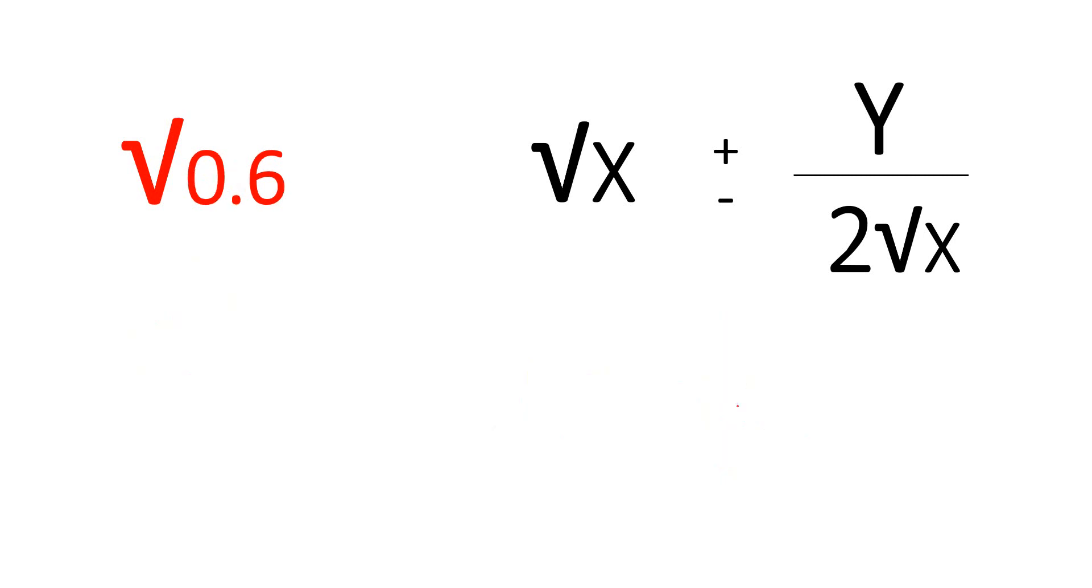For example, decimal points. Decimal points, how to find. Square root of 0.6. We can write 1 minus 0.4. Near to that is 1. So 1 minus 0.4. This is x, this is y. Careful. Square root of x is square root of 1. 1, minus is there. Minus y place is 0.4 by 2 into 1. 2, 2 is 0.2. 1 minus 0.2 is 0.8. Square root value is 0.8.